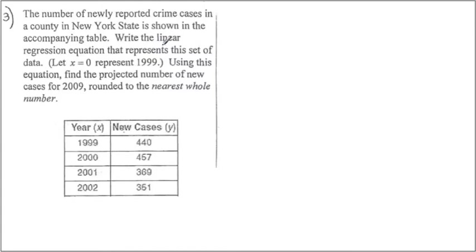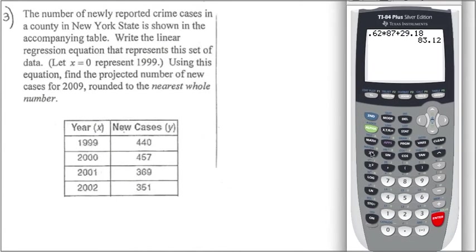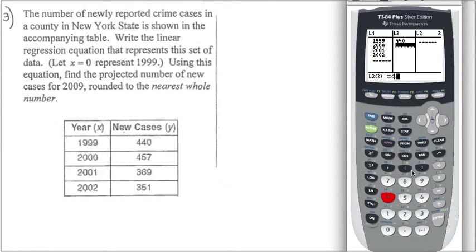Let us move on. Here, we have X and Y. Linear regression equation. Project the number to the new case for 2009. X value has to be 2009. So let's try to look into this one together. I'm going to put this one into L1 and L2 just like before. Clearing the tables. So we have 1999, 2000, 2001, 2002, and 440, 457, 369, 351.